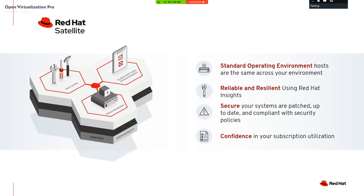Red Hat Satellite uses a standard operating environment — a standard set of software packages that you can promote between three stages: developer, test, and production. You can easily access information about whether your system is patched, and easily get information about subscription utilization.